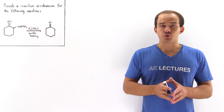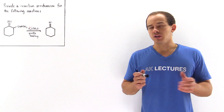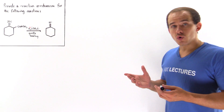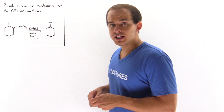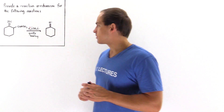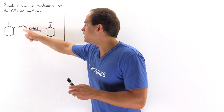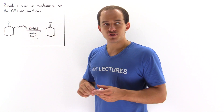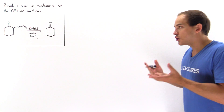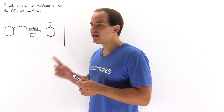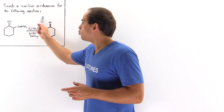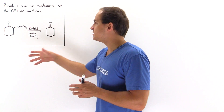Now that we've discussed reactions with beta-keto esters, let's take a look at the following example. Our goal is to provide a reaction mechanism for this particular reaction in which we transform this starting material into this product via the given conditions. To determine what the reaction mechanism is, we have to analyze what the starting material is, what the final product is, and what conditions we have to use to get there.